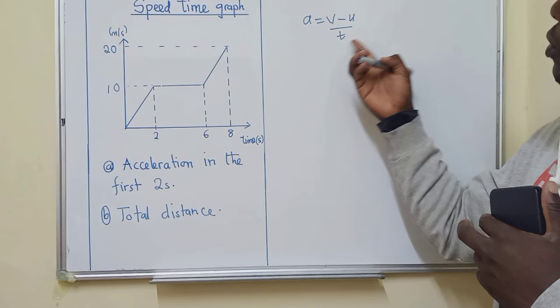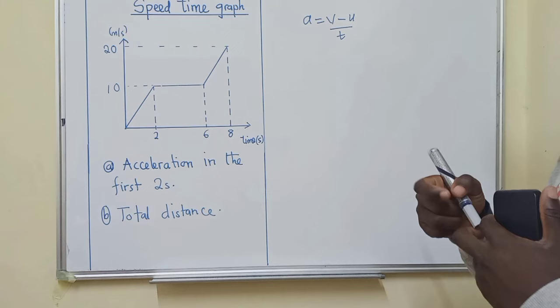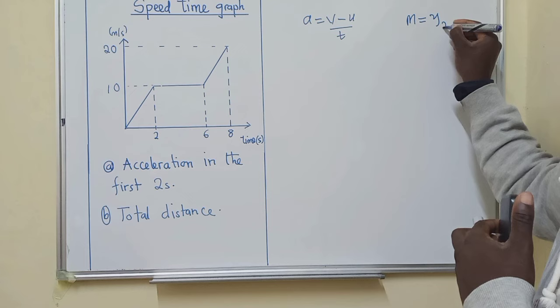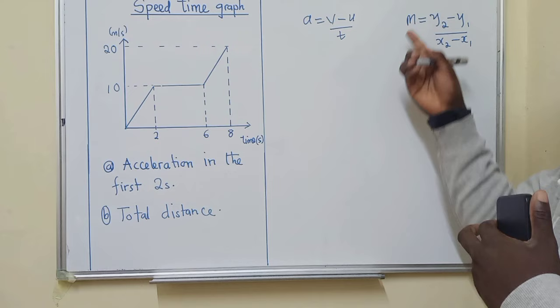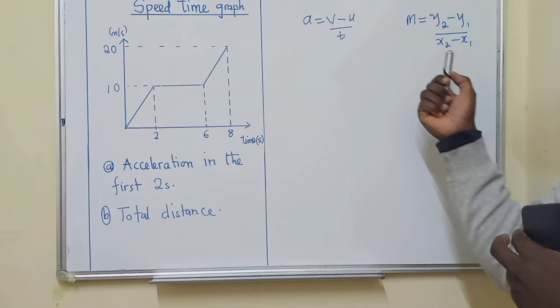I won't say much about this formula in that this is a formula you use to find acceleration. And the first question wants us to find acceleration. If you don't want to use this formula you can use this other one. I guess you have come across this formula somewhere. Of course this is the formula for finding a gradient of a straight line.